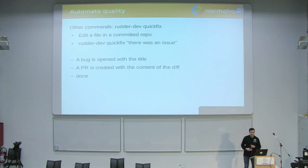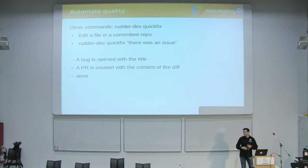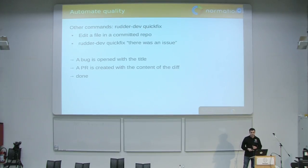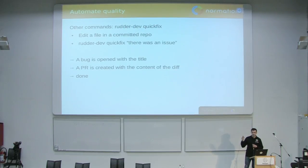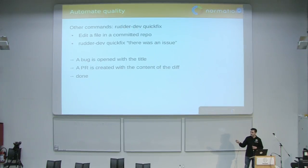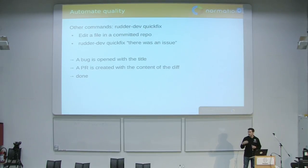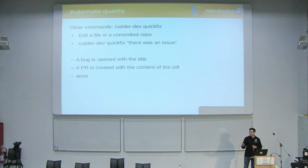I also have a command called quick fix. Let's say you have a typo to fix — you're browsing your source base, it's already committed and clean, and you find just a typo. Well, just fix it. And after you fix it, run 'rudder-dev quick fix'. It will open the ticket for you, create the pull request, create the commit with the diff corresponding to what you've just done. And that's all — you don't have anything else to do, you don't have to think about where to go.